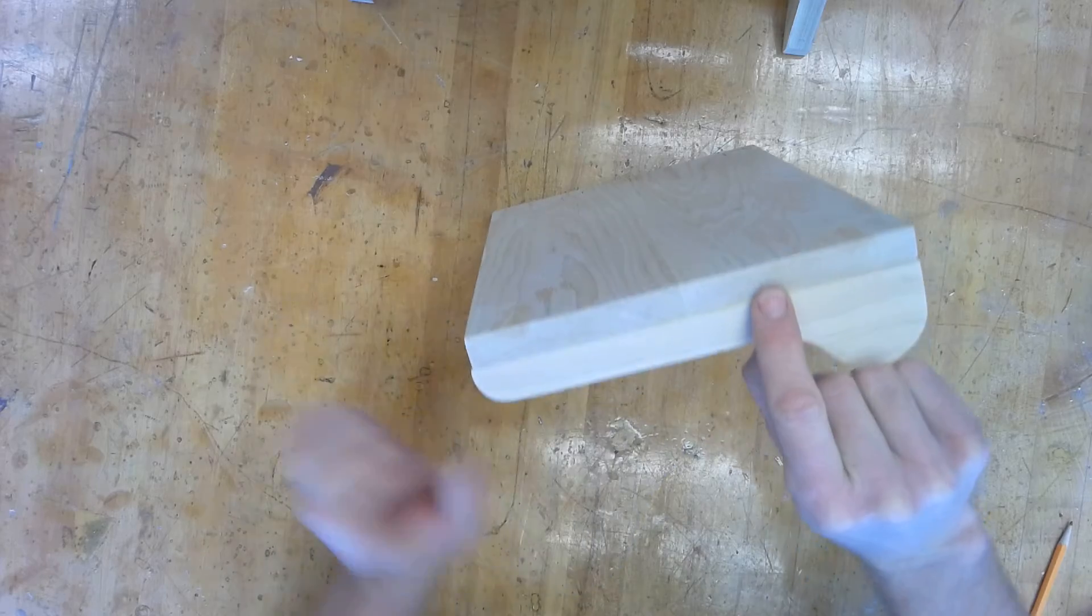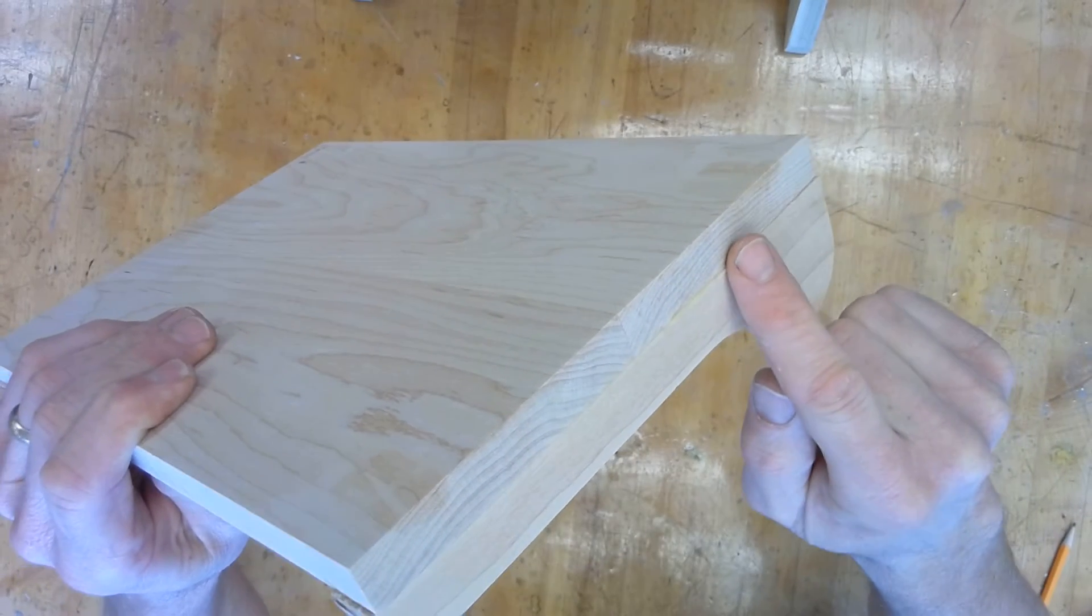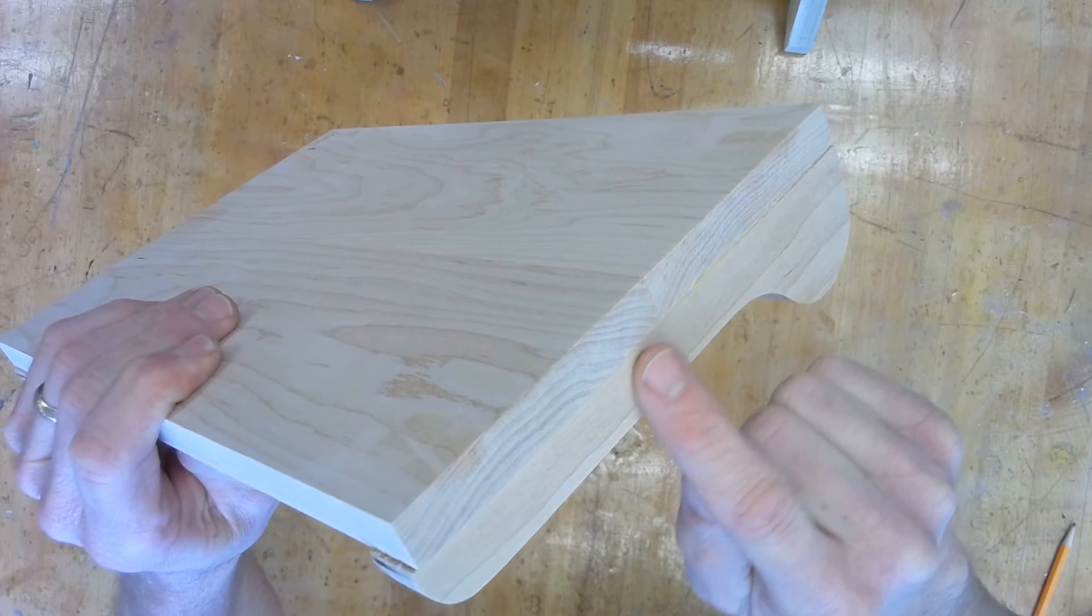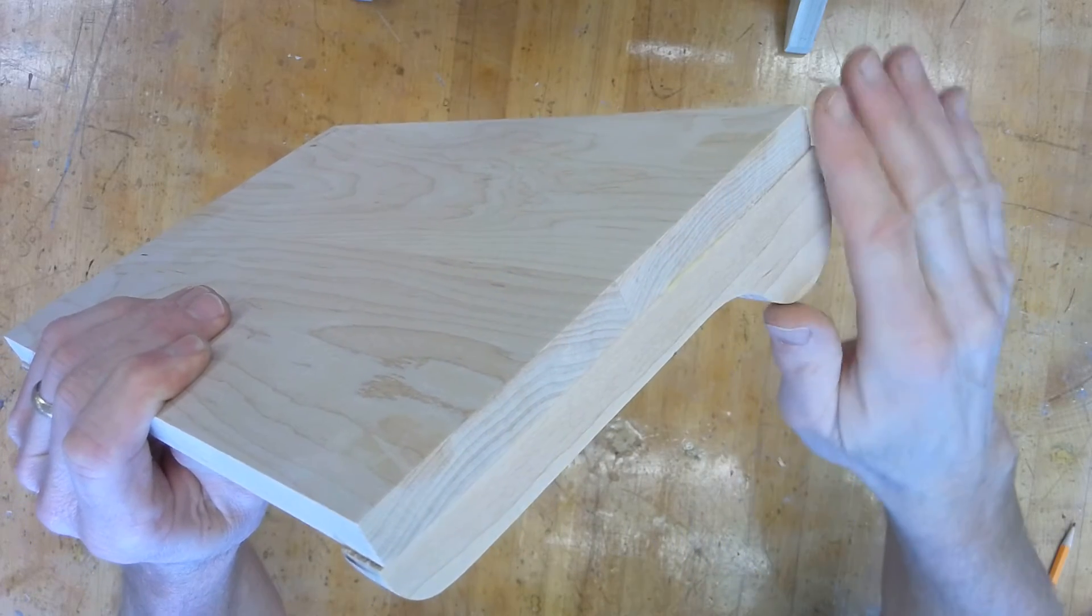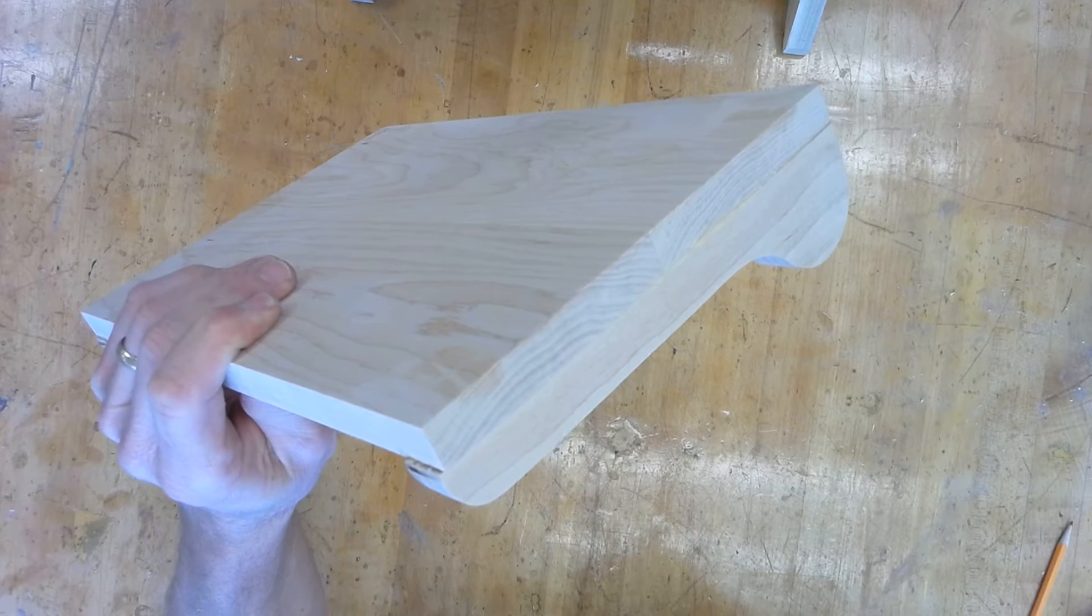So I've taken the clamps off of mine, and what we need to do is sand it up a little bit before our next step. We have this squeeze out here, the glue that's squeezing out. We need to make sure that this is nice and flush.